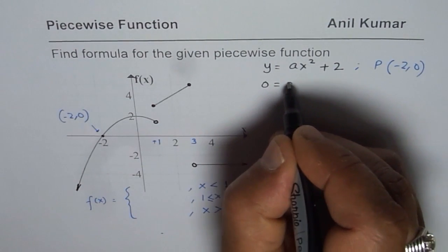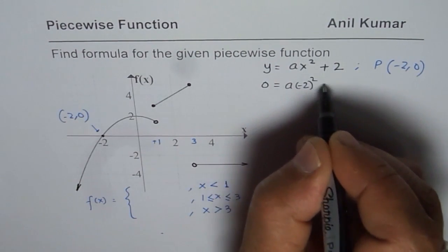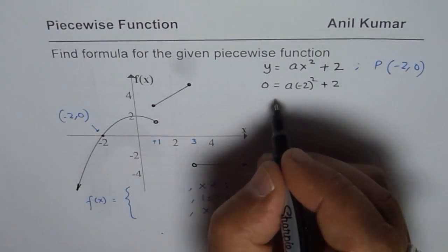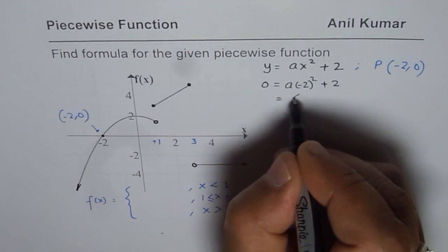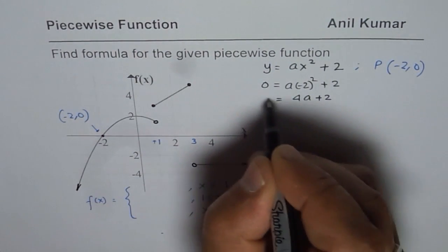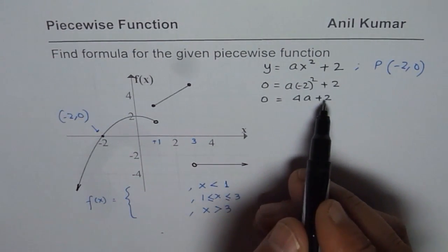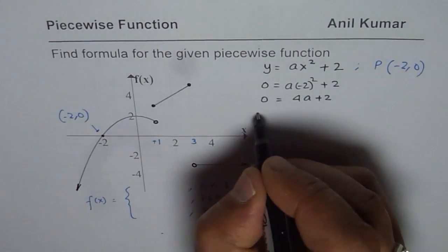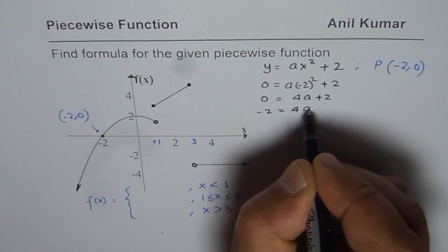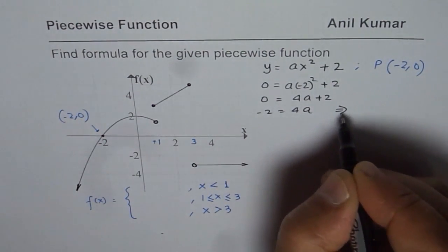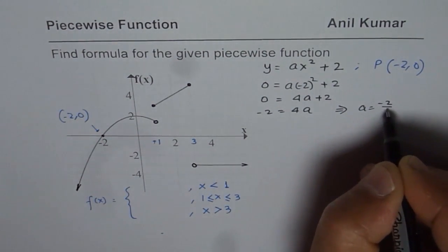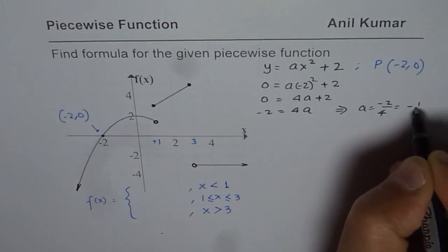So we get 0 equals to a times minus 2 square plus 2 and that is, this is 4. So 4a plus 2 equals to 0. We can simplify a, 2 comes from this side, so we get minus 2 equals to 4a and that gives us the value of a as minus 2 over 4 or minus half.